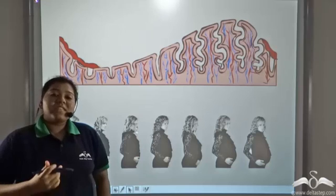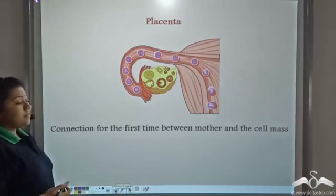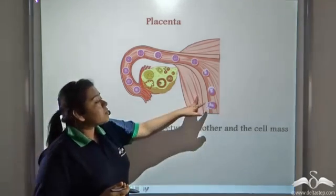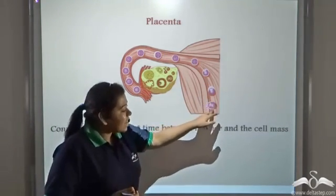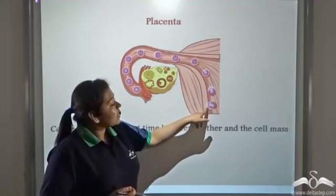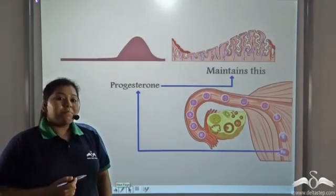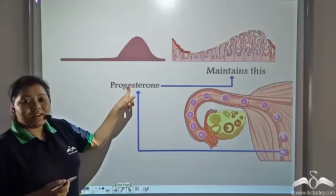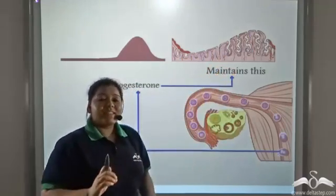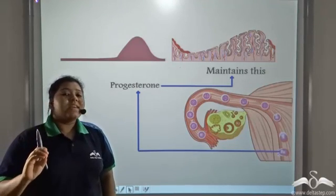What is responsible for this maintenance of the endometrial layer? The connection formed for the first time between the mother's uterus and the cell mass is known as the placenta. As seen in this picture, the placenta is just beginning to form. Placenta secretes progesterone, which maintains the endometrial lining and causes it to thicken so that the blastocyst remains embedded into it.